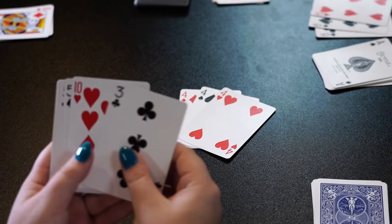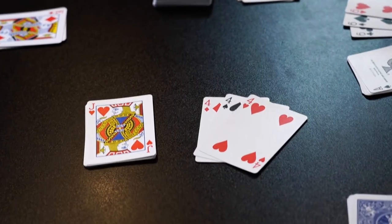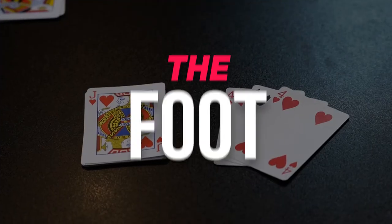Partners are not permitted to have two incomplete melds of equal rank. A book must be completed before a new meld of equal value is started.